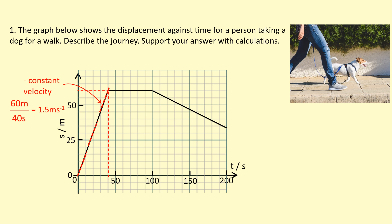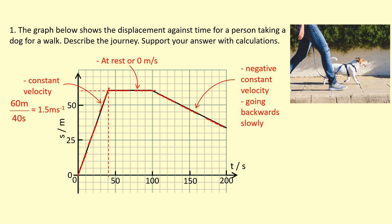In the second part of the journey, the person's displacement stays at 60 meters, which means they are not moving — they're at rest with a velocity of 0 meters per second. Afterwards, the displacement starts to decrease; they're going back to where they started but don't quite make it, ending up at around 35 meters. It's a steady decrease in displacement, meaning there's a constant negative velocity — they're going backwards at a steady rate.